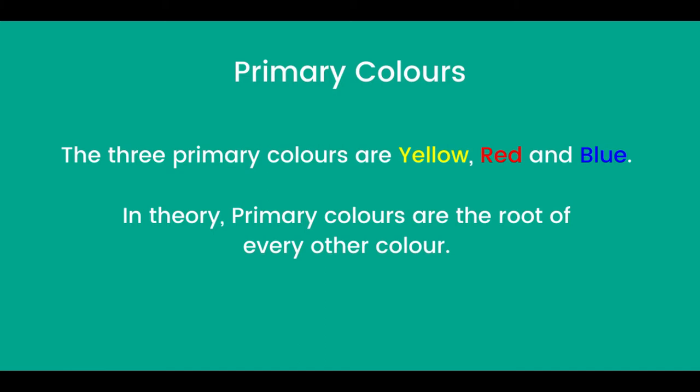The three primary colours are yellow, red and blue. In theory, primary colours are the root of every other colour.